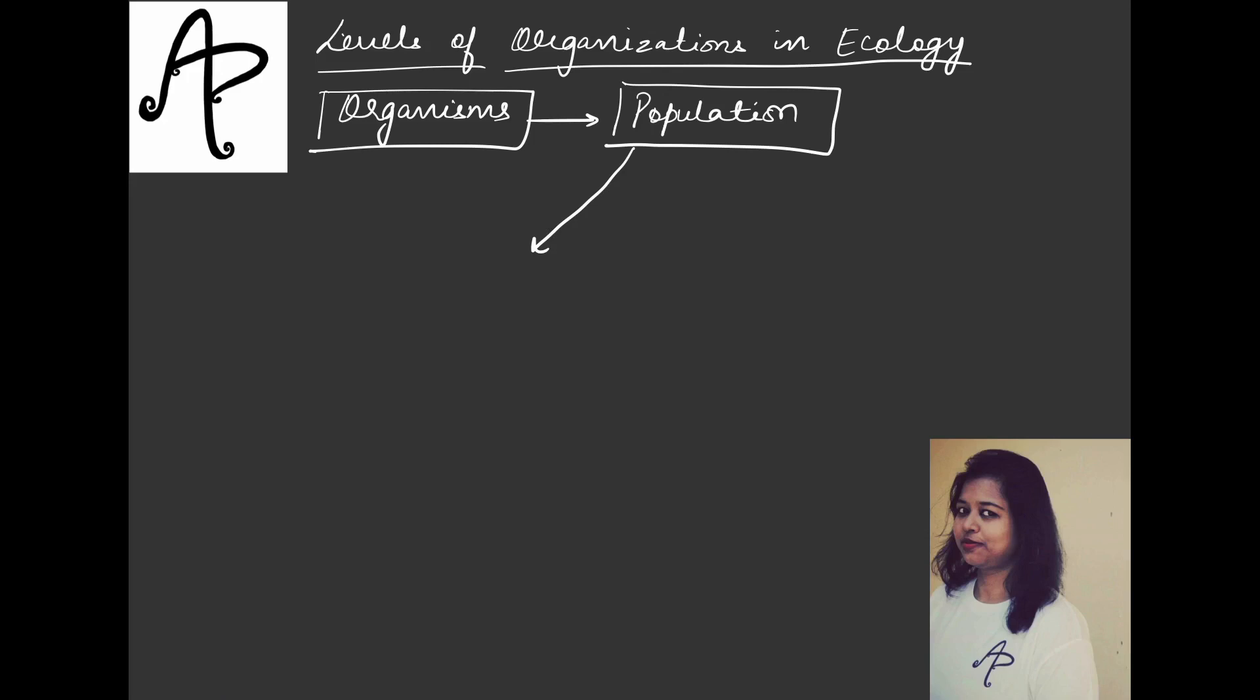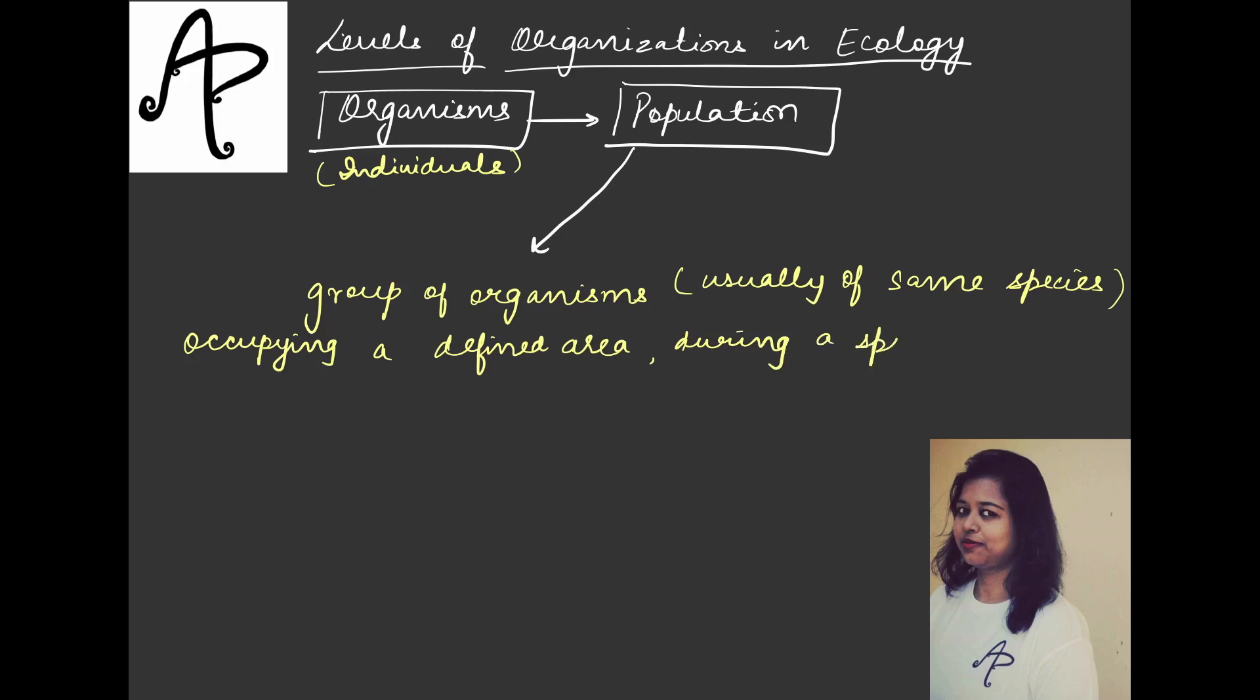Let's see what about Population. In the case of Organisms, we have seen that it is about the individuals. So Population basically is Group of Organisms, usually of same species. Now I have already explained to you all of these terms, what is species, what is organism, what do you understand by individual. So a Group of Organisms occupying a defined area. Now this is very important. You will not call all the groups as population. That group of organisms which is occupying a defined area or a definite area and that too during a specific time. All these criteria will meet only then you will call a group of organisms as a population.